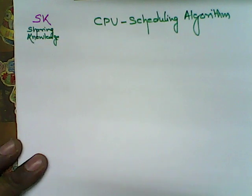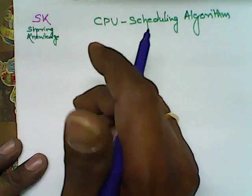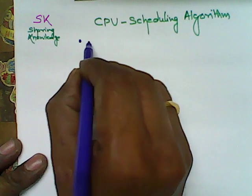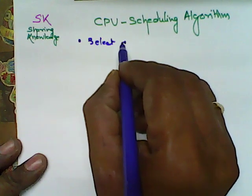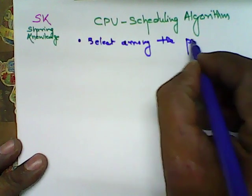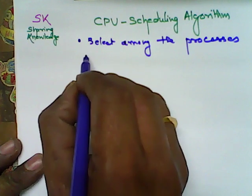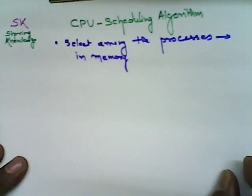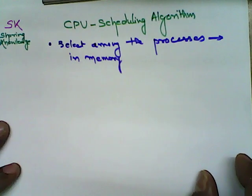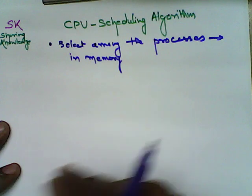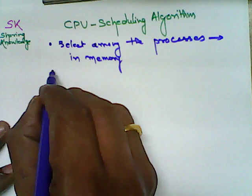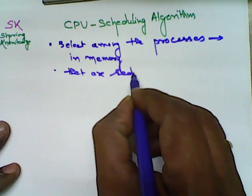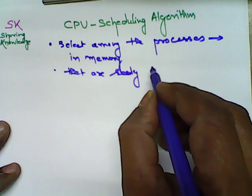What exactly does CPU scheduling algorithm mean? CPU scheduling algorithm is used to select among the processes in memory that are ready to execute.